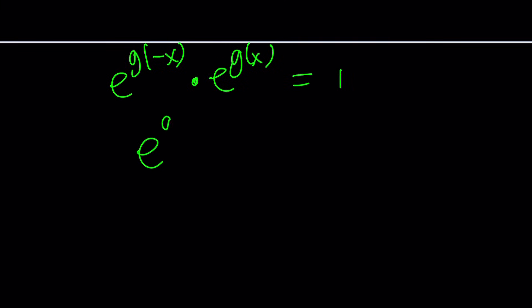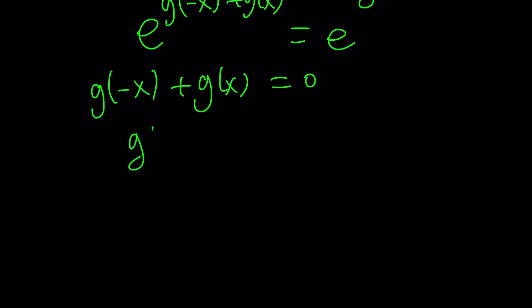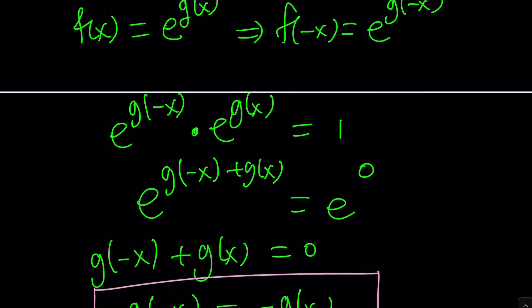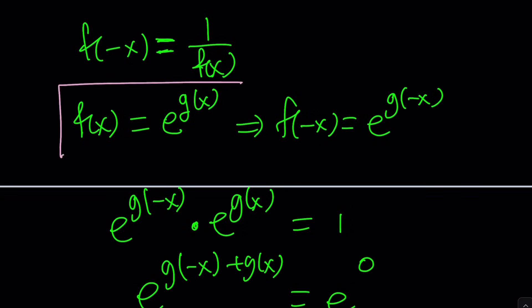This one times f of x, which is e to the power of g of x equals one. Now we know that we can add the exponents, which is really cool. And one can be written as e to the power of zero, which means g of negative x plus g of x is equal to zero. And you know what that means? This is awesome because this means g of negative x is equal to negative g of x. And that means g is an odd function. So g is odd like sine of x, or x, or negative x cubed.